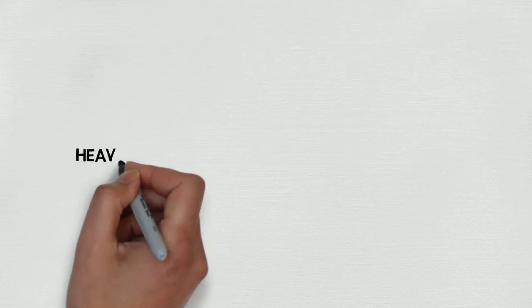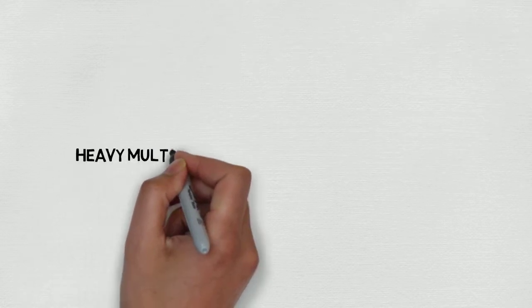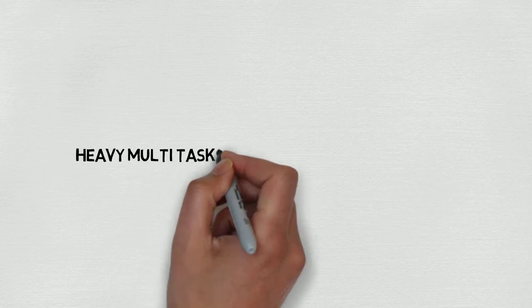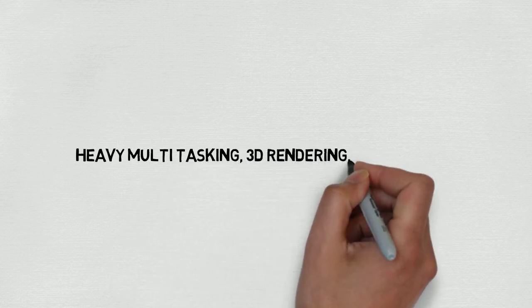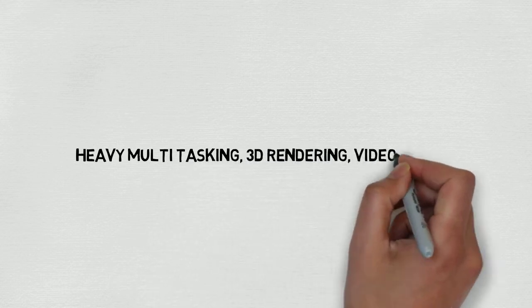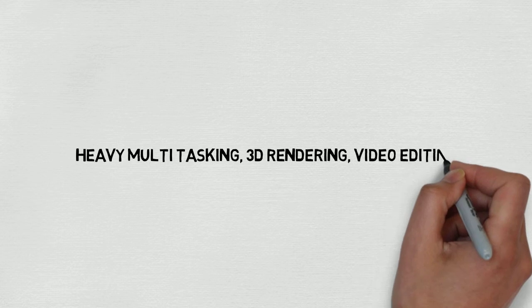Having hyper-threading means the OS sees the microprocessor as two separate processors. Hyper-threading is used in heavy multitasking, 3D rendering, and video editing at the same time.